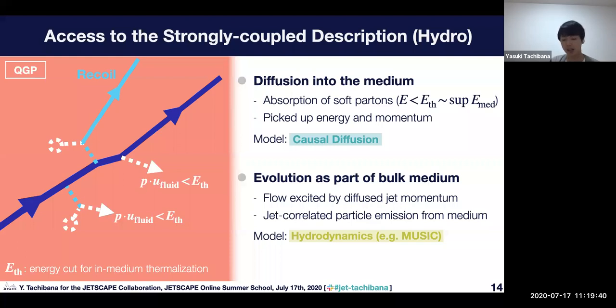In the model, how can we access the strongly coupled distribution, the hydro? Let's see how this happened.